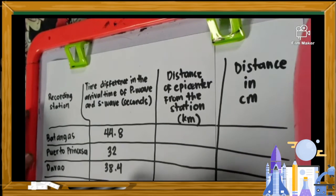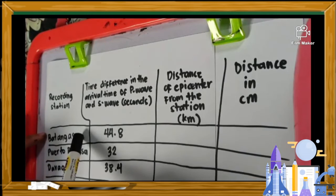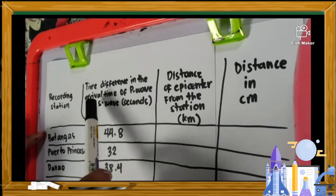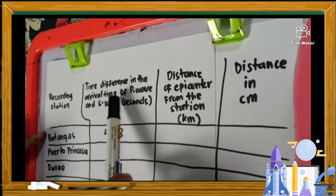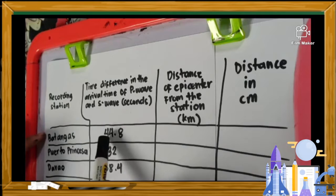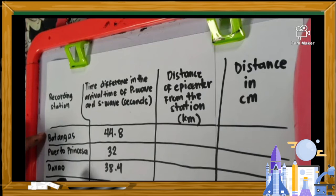For example, we have three recording stations, namely Batangas, Puerto Princesa, and Davao. We also have the time difference in the arrival time of P wave and S wave in seconds. For Batangas, we have 44.8 seconds. For Puerto Princesa, we have 32 seconds. For Davao, we have 38.4 seconds.